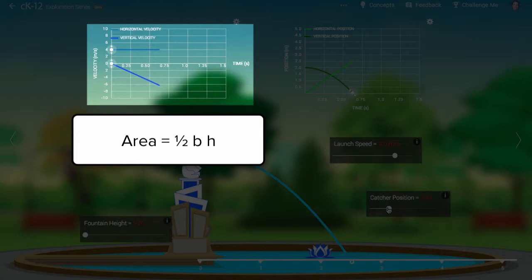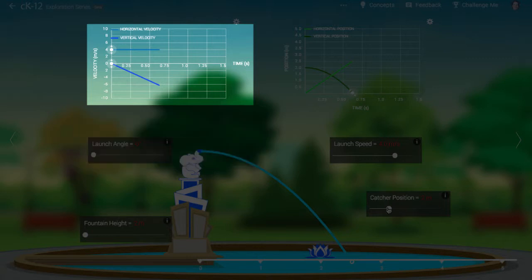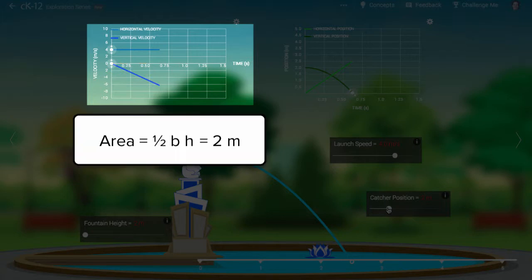But again, how do we know how wide to make the base? How long is the water in the air? Now we have an answer. The time traveled in air, the base of this triangle, is exactly that needed so that this triangular area equals the starting height of the water. So we set the fountain height equal to the area and solve for the missing amount, the time.